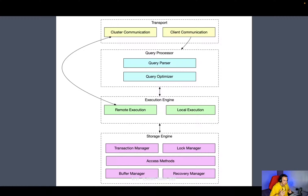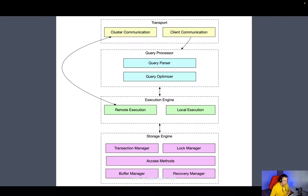Once the query is optimized, it is handed over to the execution engine, where it is executed either locally on a single node or by querying other nodes if data is split. Then the storage engine takes its place. For example, when updating several tables, a transaction manager is involved. A lock manager locks the rows being updated. We need to verify the current user has access, we may buffer some data, and if something goes wrong, a recovery manager handles it.